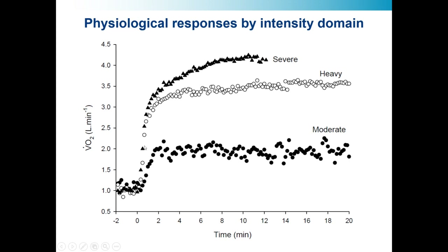With the white circles you can see the heavy intensity domain. Here you get the same rise in VO2 — it's larger because it's a higher exercise intensity — and the oxygen uptake response doesn't reach a steady state in two to three minutes; it takes 10 to 15 minutes to reach a steady state, but eventually it will reach a submaximal VO2. The delayed steady state is caused by what we call the VO2 slow component, which I'll cover in another presentation.